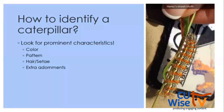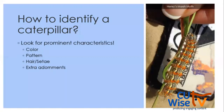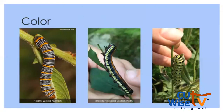When it comes to actually identifying a caterpillar, we want to take note of colors, patterns, hairs (also called setae), and extra adornments or features like that tail. For example, on Henry's marsh moth caterpillar we would see a cream and black mottled caterpillar with orange spots, clusters of hairs from those orange spots, and a cream stripe along the side of the abdomen. Making note of all of those features together helps make a positive identification.